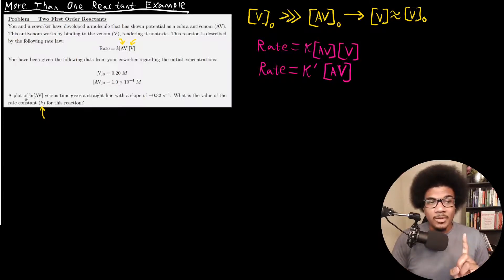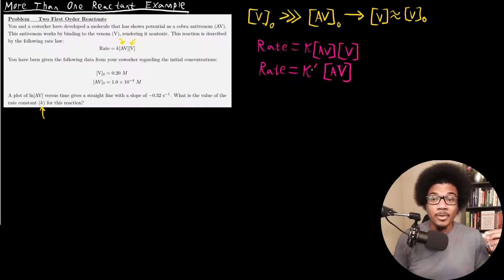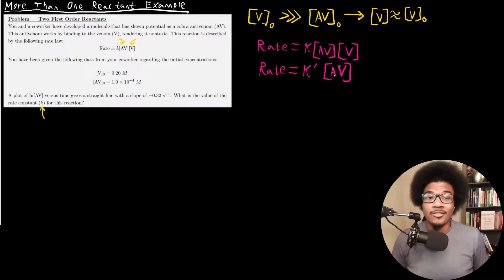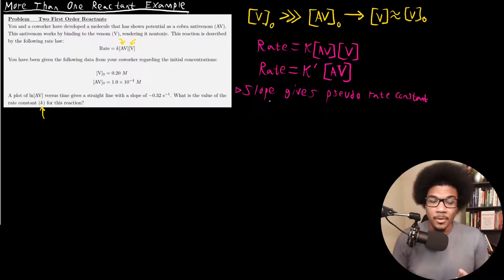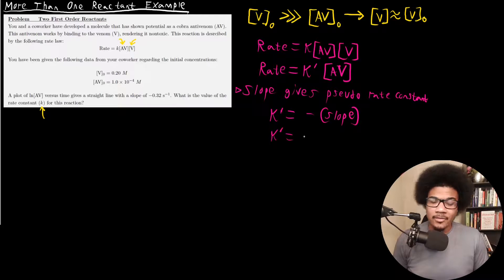When we plot the natural log of the antivenom versus time, it gives a straight line with a slope of negative 0.32 per second — that is going to be your pseudo rate constant, because you're looking at the dependence of the reaction rate on just the antivenom. So we get the pseudo rate constant from the slope. Since this will be a pseudo first order reaction with respect to the antivenom, K' is going to equal the negative of the slope, just like a regular first order reaction. So K' = 0.32 per second.